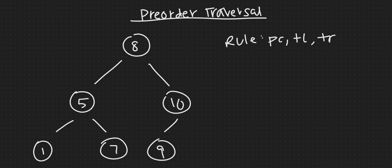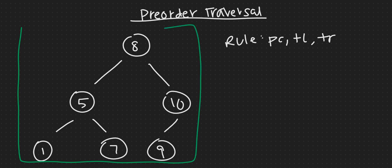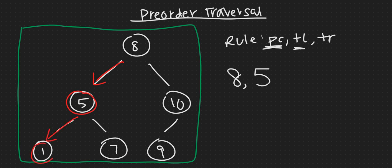So let's try doing a pre-order traversal on our tree. We're going to start at eight because we print the current node first, and then we traverse left — so now we go down to number five. We print the current one and traverse left again, print the current one, and because we can't traverse further we go back up to node five so that we can do traverse right. Now we go down to node seven, and since there's no traversal there we go back to node five, then back up to node eight.